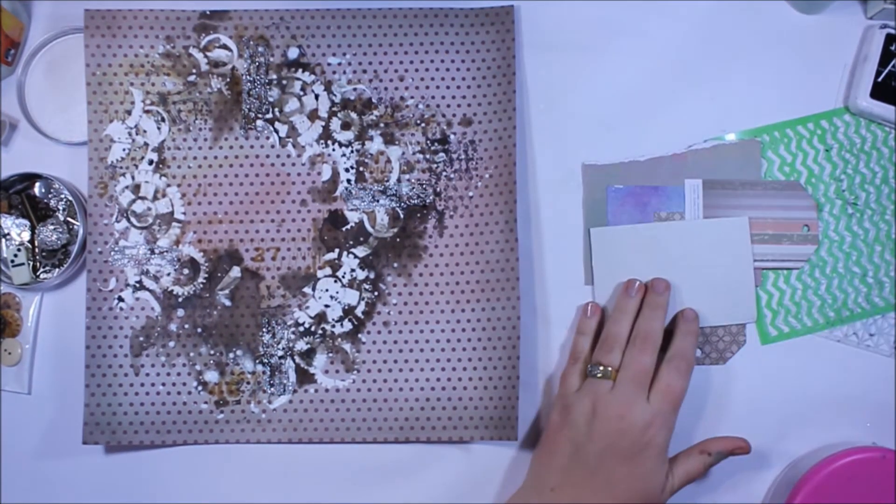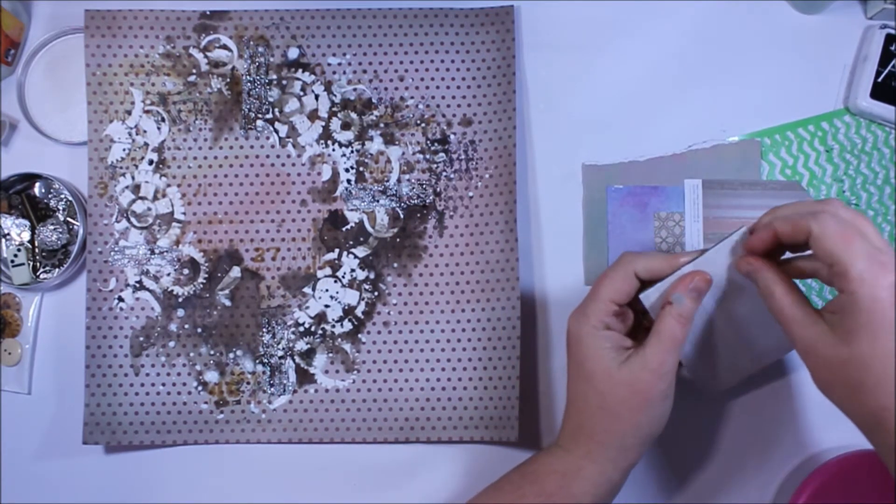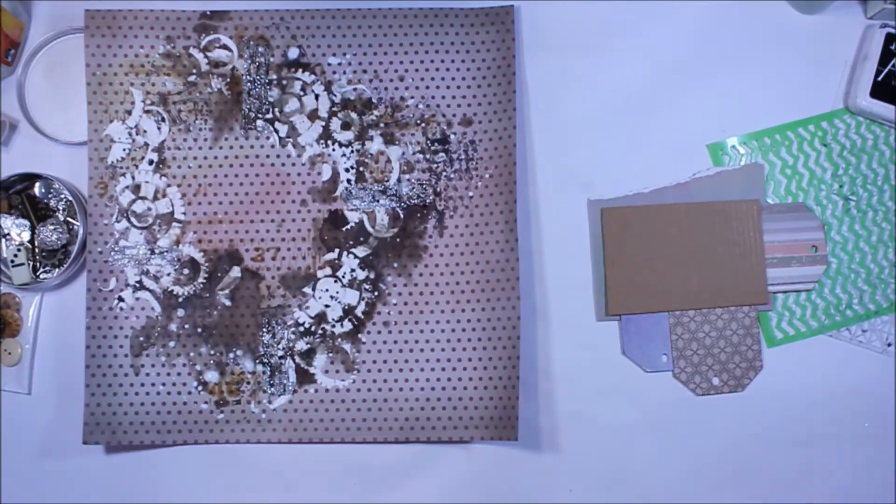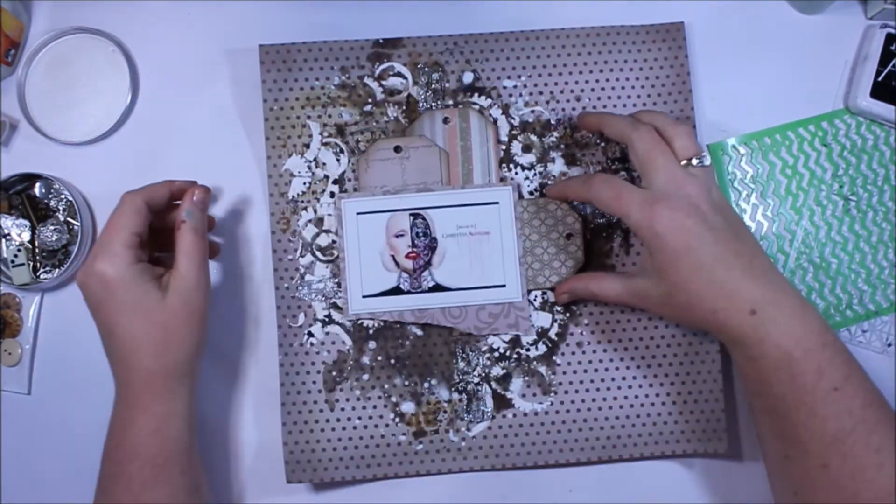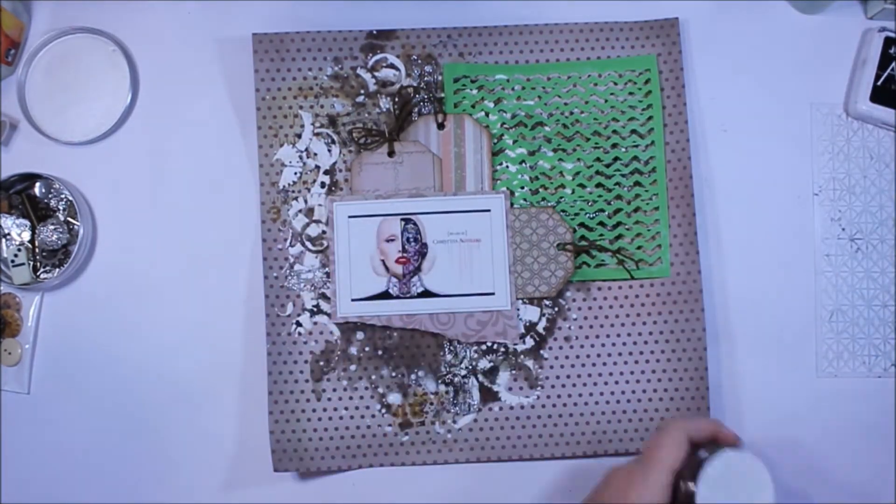Now, while I was waffling on there, what you saw me do was while those white gesso splatters were still a little bit wet, I've added some splatters of brown. And again, while the brown was wet, I've added some water and then heat dried that to move that all around the page.